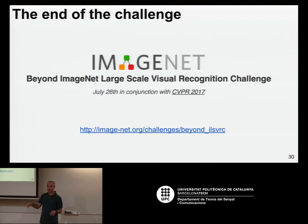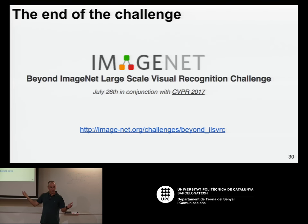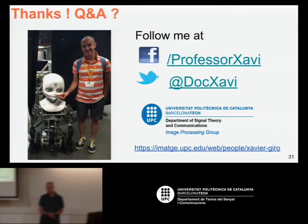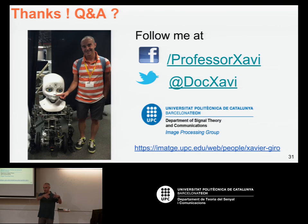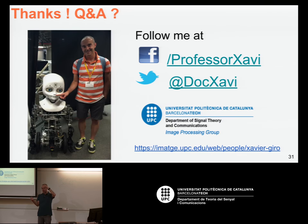In July, there is the last edition of the ImageNet challenge, with a workshop on July 26th where they'll discuss the future of ImageNet as an organization. All the models I mentioned — AlexNet, VGG, ResNet, GoogleNet Inception — are publicly available. When you go online and look for models, you'll find all of them. In computer vision, you will normally start from these models and adapt them to whatever problem you have. That's a very common practice.